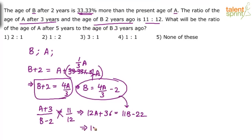So what do we get? 12A plus 36 equals to 11 into B has been taken as 4A by 3 minus 2. Minus 22. So write down the next step. What happens? 12A plus 36. This is 11 into minus 2. Minus 22 is minus 44. Minus 44 plus 36 is 80. I mean minus 44 goes to the other side becomes plus 44. So this is 80.